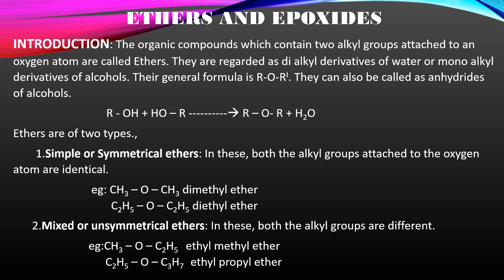Mixed or unsymmetrical ethers are opposite to simple ethers. In mixed ethers, both the alkyl groups attached to the oxygen atom are different. For example, CH3OC2H5 is ethyl methyl ether, and C2H5OC3H7 is ethyl propyl ether. The two alkyl groups attached are different in mixed ethers; they are also called as unsymmetrical ethers.